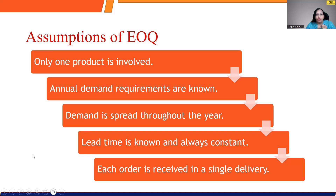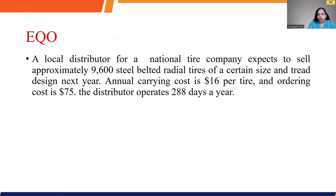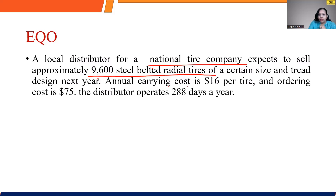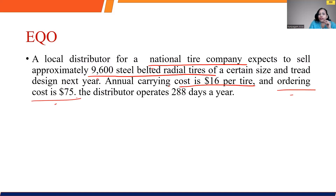Let's look at a specific numerical. There is a local distributor for a national tire company which is expected to sell approximately 9,600 steel-belted radial tires, and they want to assess the economic order quantity. The annual carrying cost is $16 per tire. The carrying cost is always calculated per unit, whereas the ordering cost is calculated for the entire lot, and the ordering cost is $75. This distributor operates only 288 days a year.